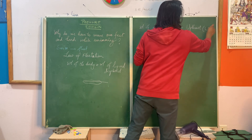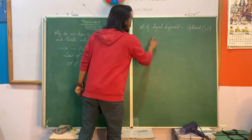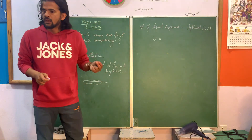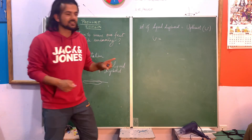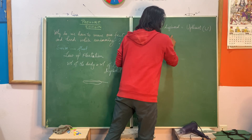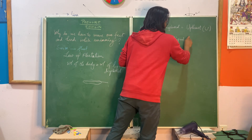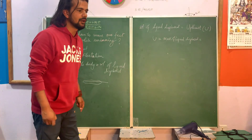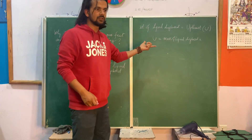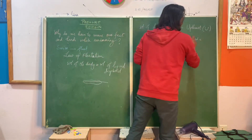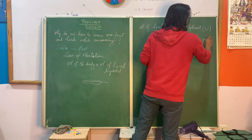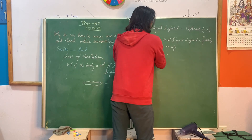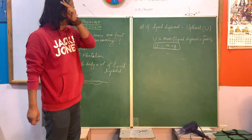We can write upthrust as U. Upthrust U equals — how do we find weight? V times D times G: mass of liquid displaced times gravity. Weight equals mass times gravity, that is acceleration due to gravity, which is M times G. So U equals M times G.